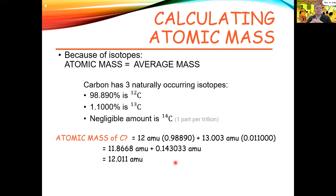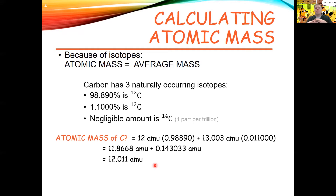As you look at multiple periodic tables, the positioning of things like the number of protons and atomic mass isn't always standardized. But generally, the whole number you see is the number of protons, and the number with decimal places is the atomic mass. Some periodic tables include additional information like state at room temperature or crystal structure, but focus on finding the number of protons and the atomic mass.